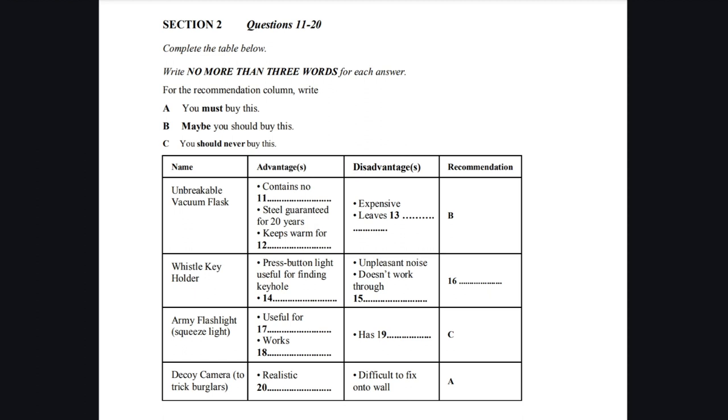Now you have some time to look at questions 17 to 20. Now listen and answer questions 17 to 20. The third gizmo is called the Army Flashlight because it was developed initially for military use. It works by squeezing the handle to generate the power. Its advantages are that it can be used for outside activities and also, and this is one of the surprising features, it does work underwater. My main objection to it, though, was although it did work in these conditions, this model gave off a weak light. So my recommendation, I'm afraid, would have to be to avoid this one.